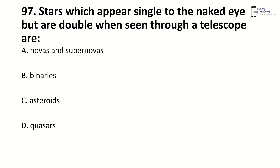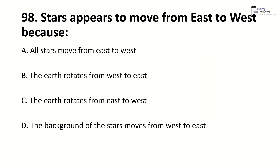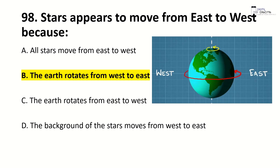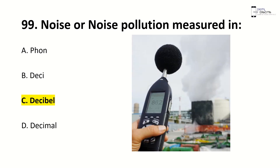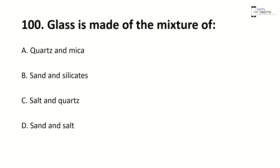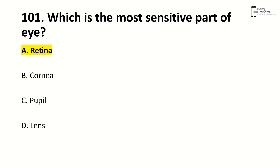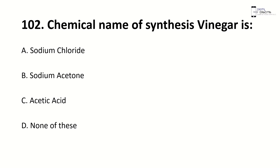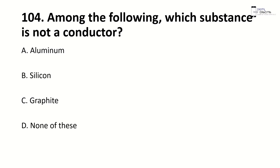Stars which appear single to the naked eye but are double when seen through a telescope are called — right answer is B, binaries. Stars appear to move from east to west because the earth rotates from west to east. Noise pollution is measured in decibels. Glass is made up of a mixture of — right answer is B, sand and silicates. The most sensitive part of the eye is — right answer is A, retina. The chemical name of vinegar is acetic acid. The total percentage of oxygen in air is — right answer is B, 21%. Among the following, string is not a conductor. In human beings, blood does not clot due to the presence of heparin.